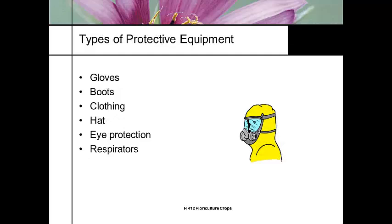Types of protective equipment you need to be familiar with — this is what we call PPE, or personal protection equipment. It includes gloves, boots, clothing, hat, eye protection, and respirators. Familiarize yourselves with all the different products you could be using.